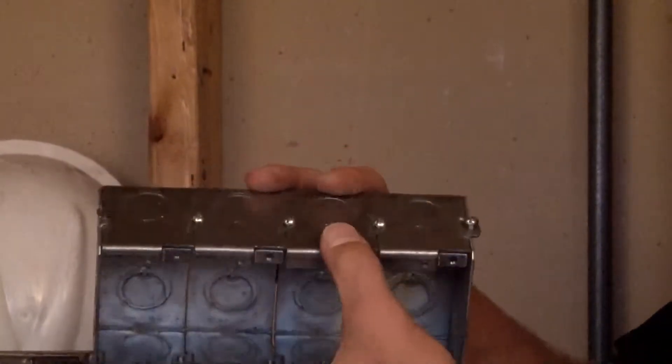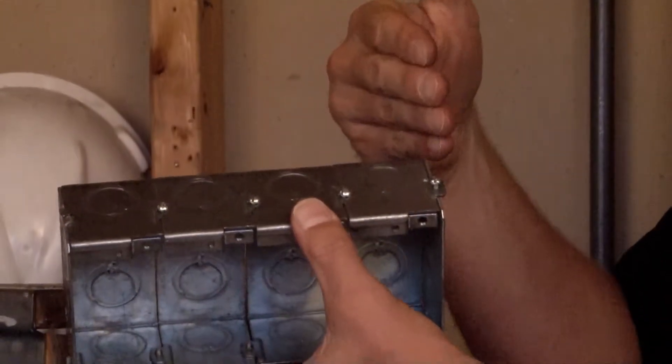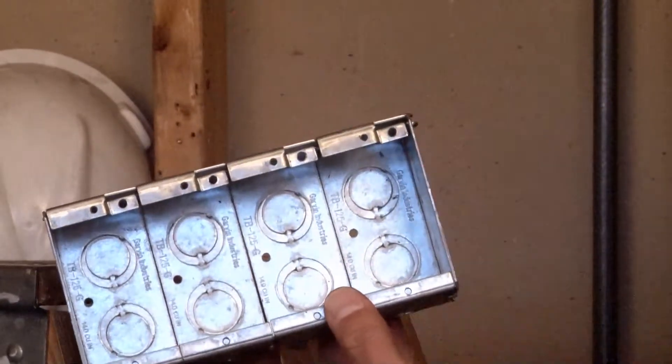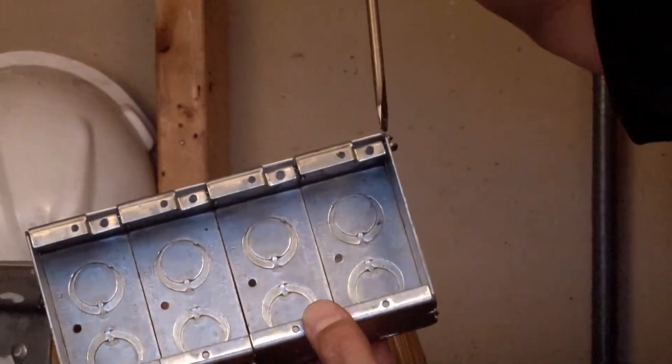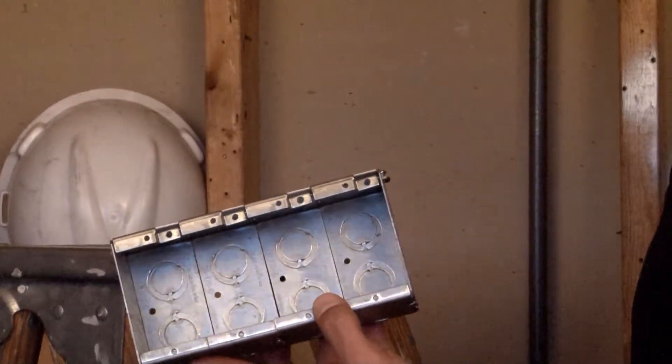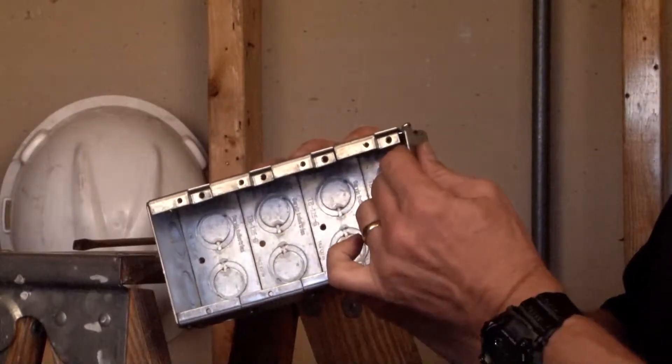What's unique about this box is that it can be disassembled and either reduced in size or expanded in size by simply removing the side panel by loosening a screw. You simply loosen the screw and pop off the side panel.